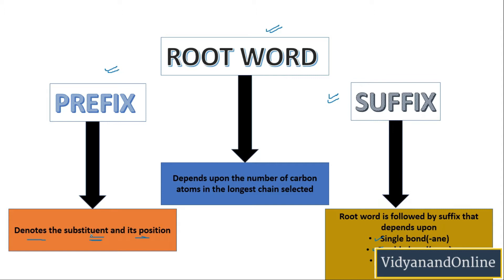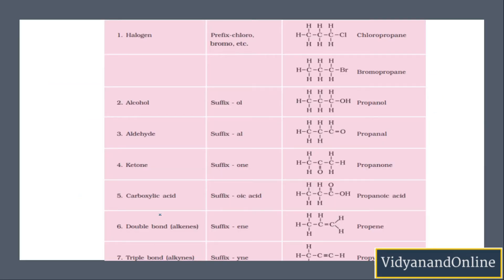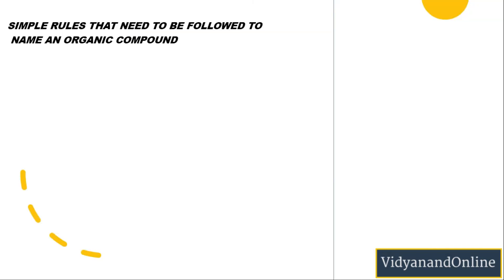Now let us see the rules we follow for naming. There are certain functional groups: halogen, alcohol, aldehyde, ketone, and carboxylic acid. Halogen is written in the form of a prefix. Alcohol is written as a suffix '-ol'. Aldehyde is '-al', so wherever '-al' appears in a compound it means aldehyde. Ketone uses '-one'. Carboxylic acid uses '-oic acid' as a suffix. Double bond uses '-en' and triple bond uses '-yn'.